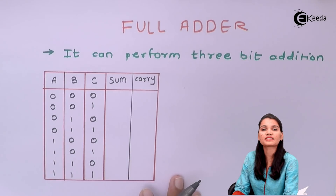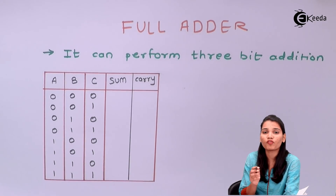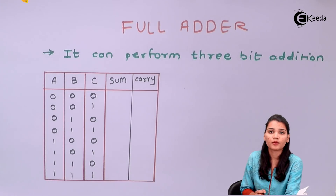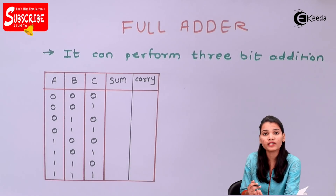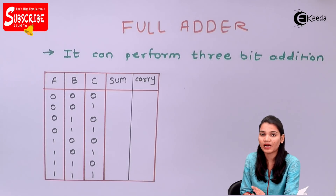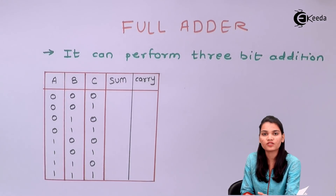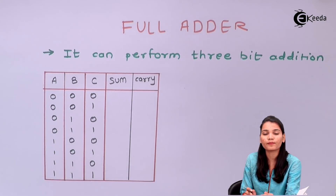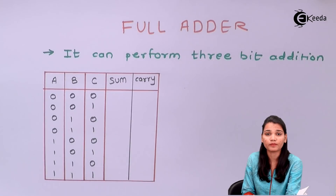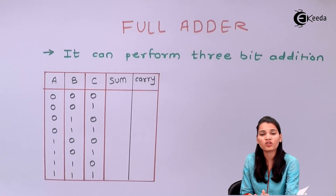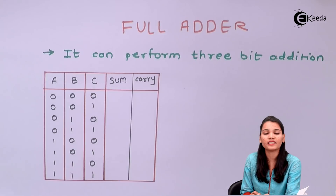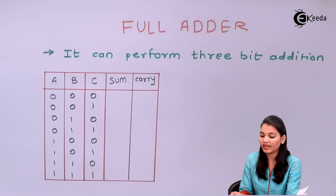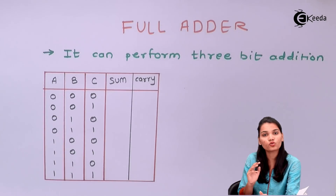In the previous section we have seen that the half adder can perform only the addition of two bits. But what if we have more than two bits? It can't be performed using the half adder circuit. That's why we are going to use the full adder circuit, which can also take the carry of the previous stage to the next stage.